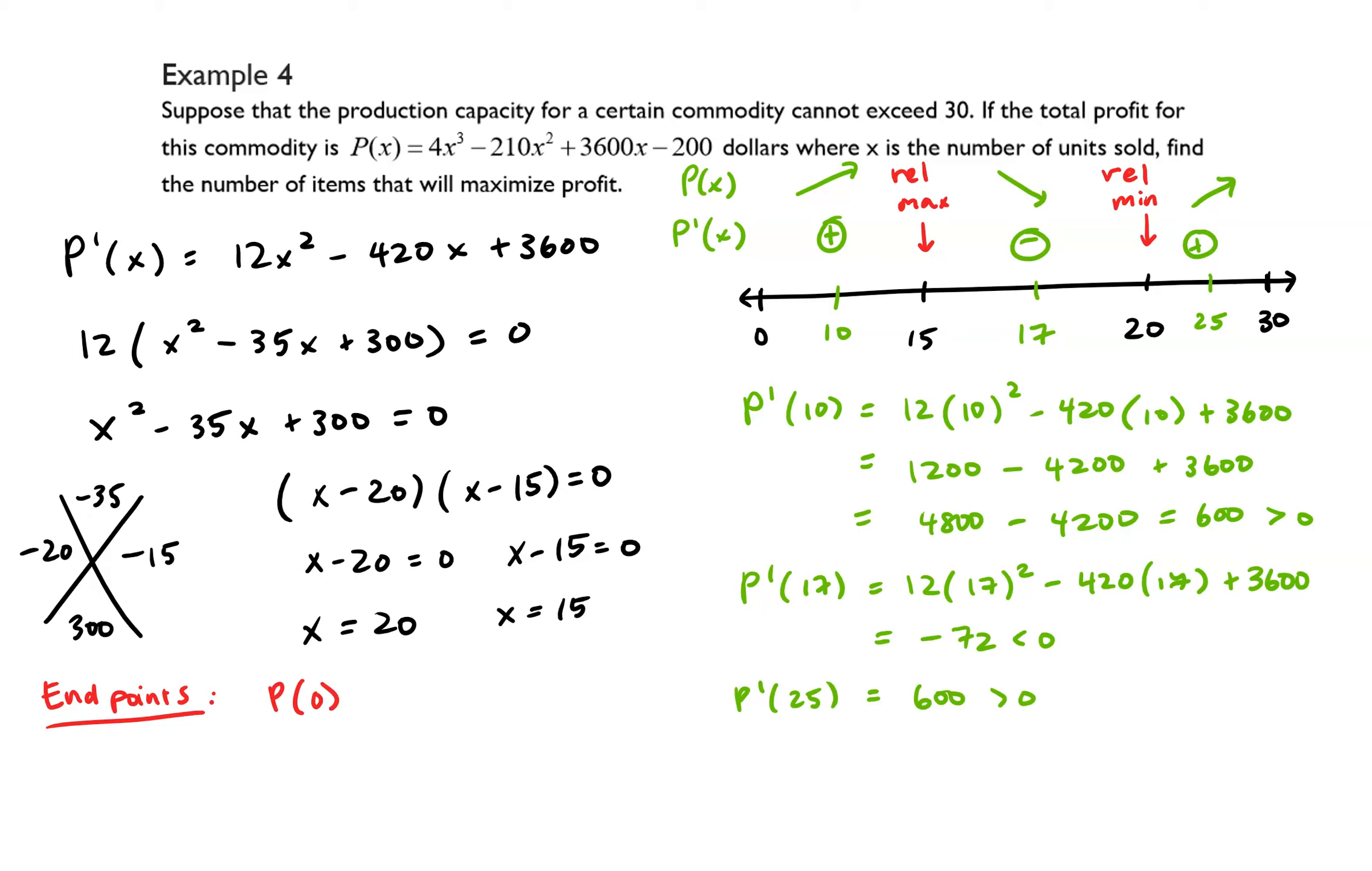So if I evaluate p of 0, that gives us negative 200, and p of 30 is equal to 26,800, and we need to evaluate p of 15 as well. And p of 15 is equal to 20,050.